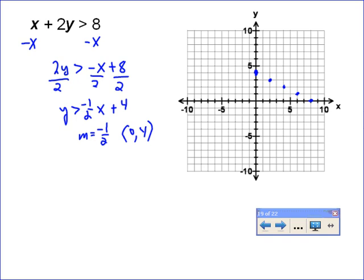Remember that this is a dashed line because it's not equal to. Whenever it's not equal to, we've got to put a dashed line because the line itself is not part of your solution. Then the last thing we do is test a point to decide which side to shade. If the point we test is true, we shade that side of the line. If it's false, we shade the other side.